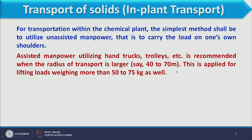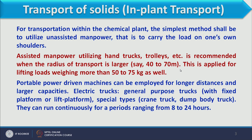When we have to transport for larger distances — since up to 70 meters is very limited even in smaller plants — we have to see other options. For longer distances we can use portable power-driven machines, which have larger capacity in comparison to hand trucks and trolleys. These power-driven machines include electric trucks, that is general-purpose trucks with fixed platform and lift platform.